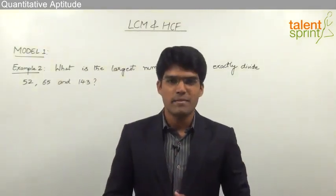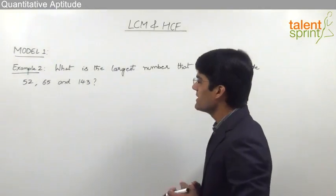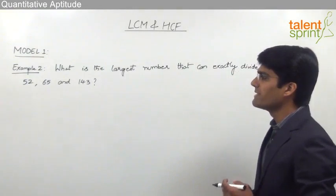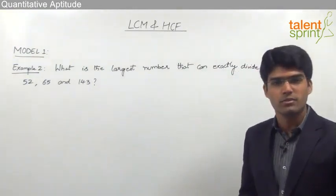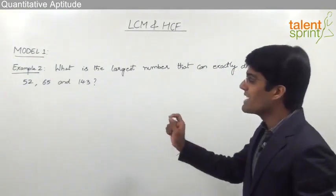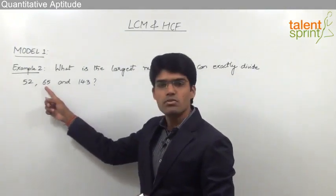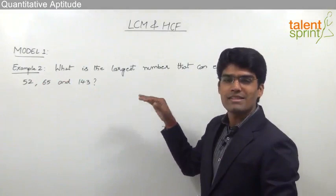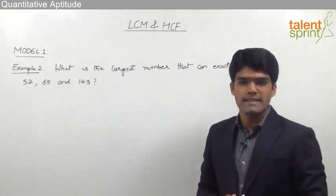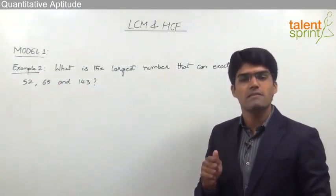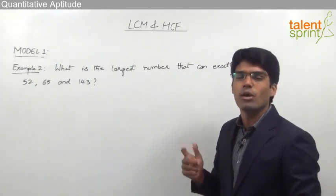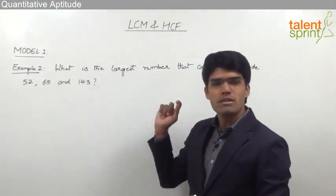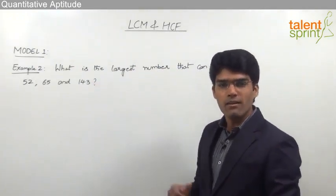Let us now take the second example from model number 1. The question is: what is the largest number that can exactly divide 52, 65 and 143? So we need to find the largest number which can exactly divide all three given numbers. As we have learned, HCF — highest common factor — gives the largest number that can divide all the given numbers.